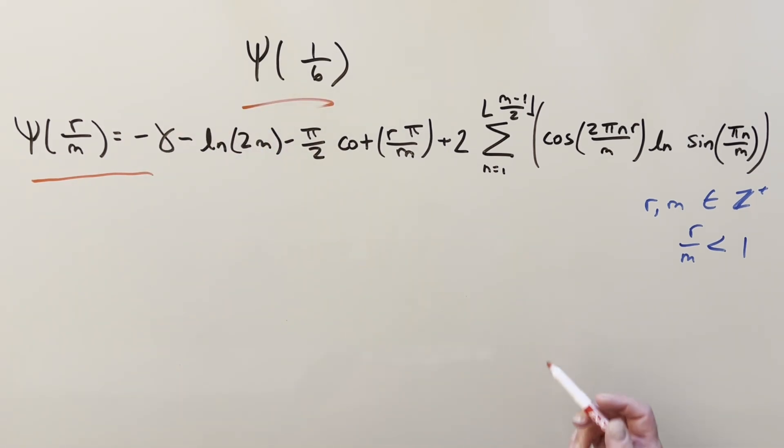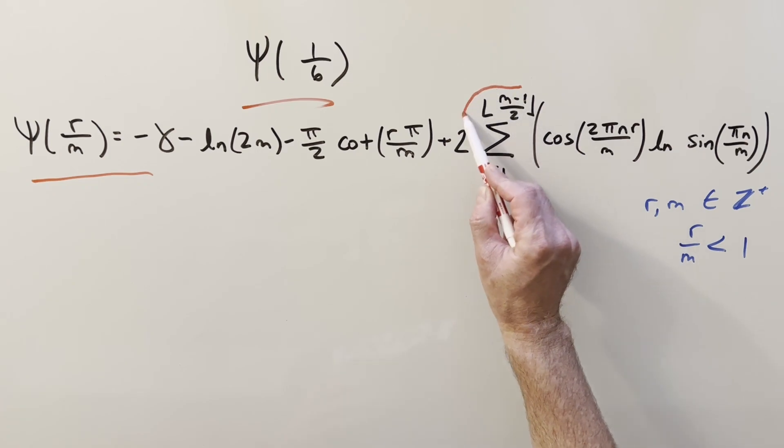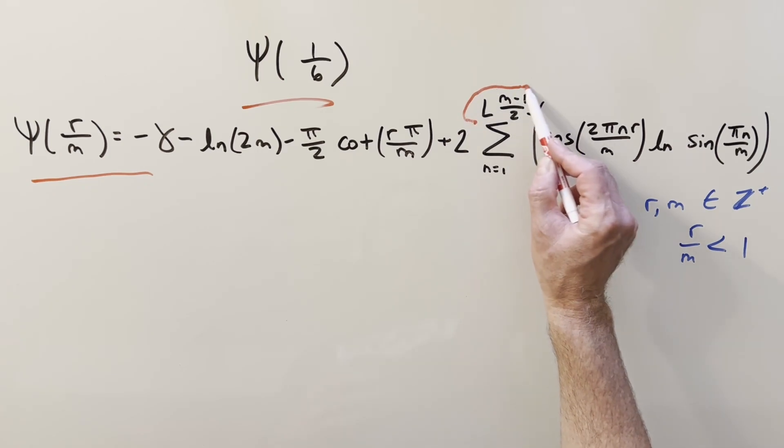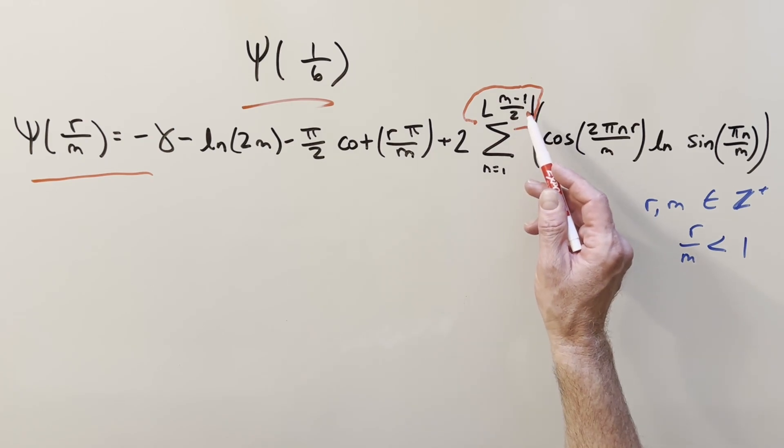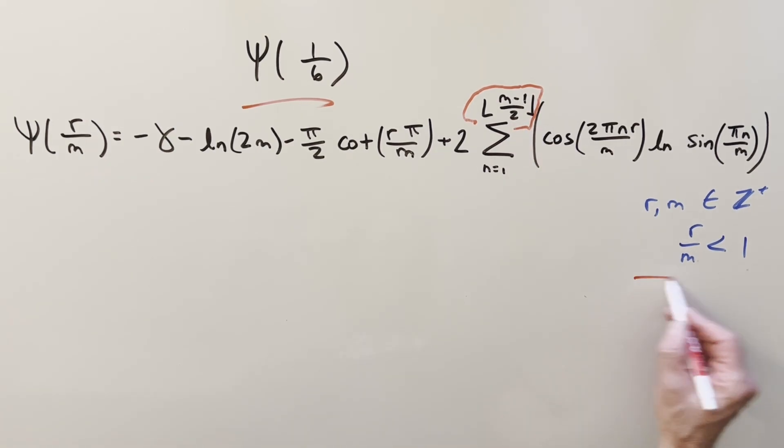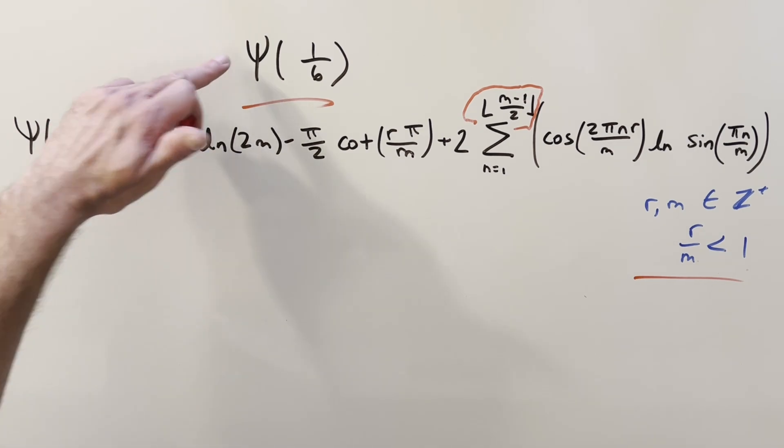A couple interesting things here. It's kind of cool that we actually have the floor function on the bounds of our series right here. That's the floor of m minus 1 over 2. And we have a couple conditions over here to the right that can help us choose our r and m value in order to evaluate this.